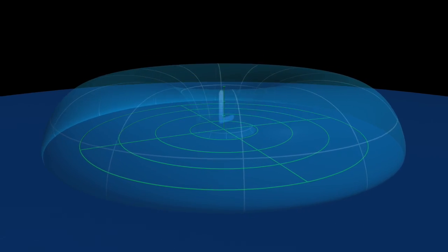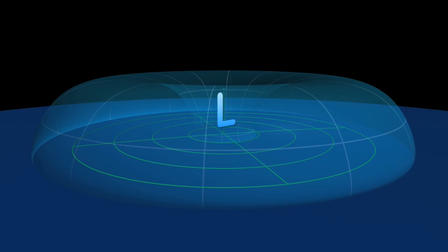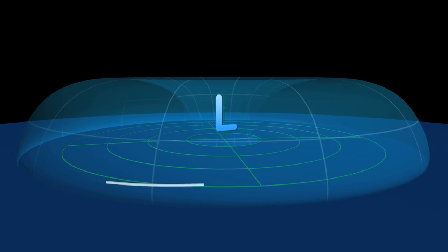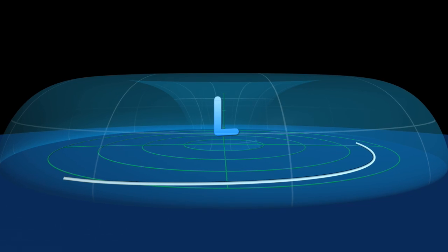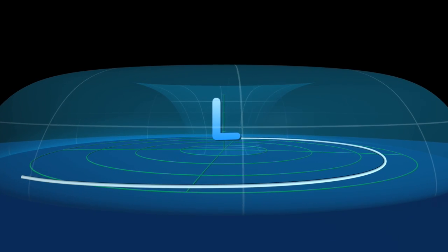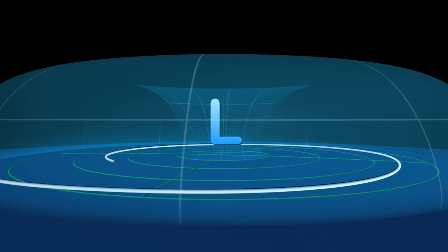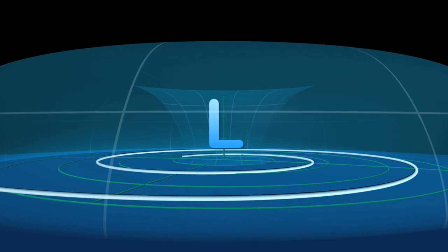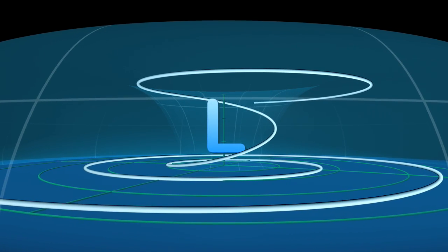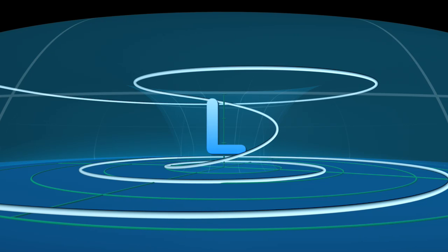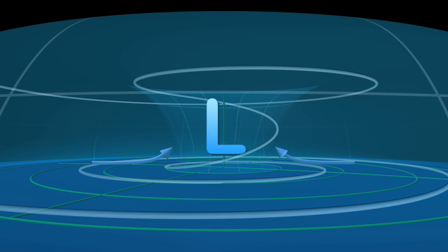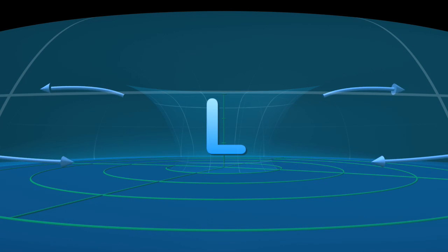A hurricane's eye is an intense low-pressure system. Near the ocean's surface, air spirals inward in an attempt to fill the low-pressure region. As air nears the eye, it rises rapidly until forced outward at the barrier formed by the warm tropopause. The net effect is a cycle of air moving inward near the ocean's surface, upward at the eyewall, and outward at high altitudes.